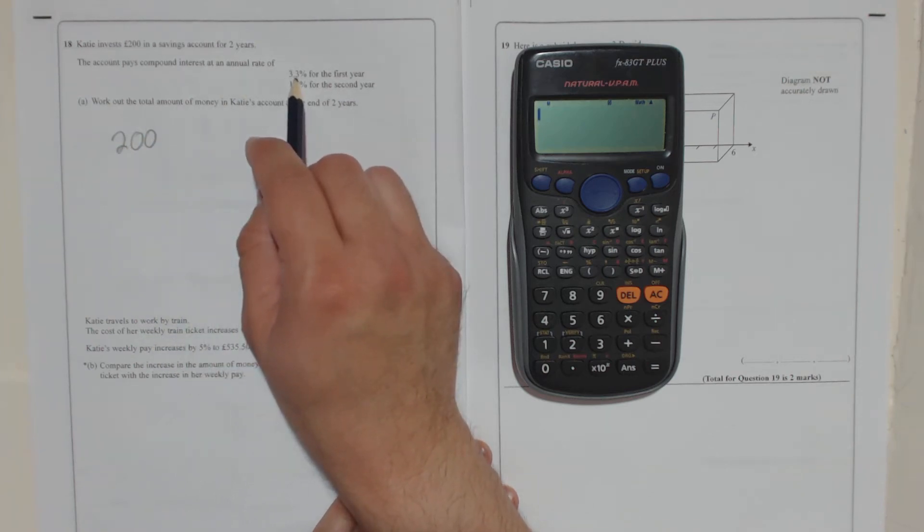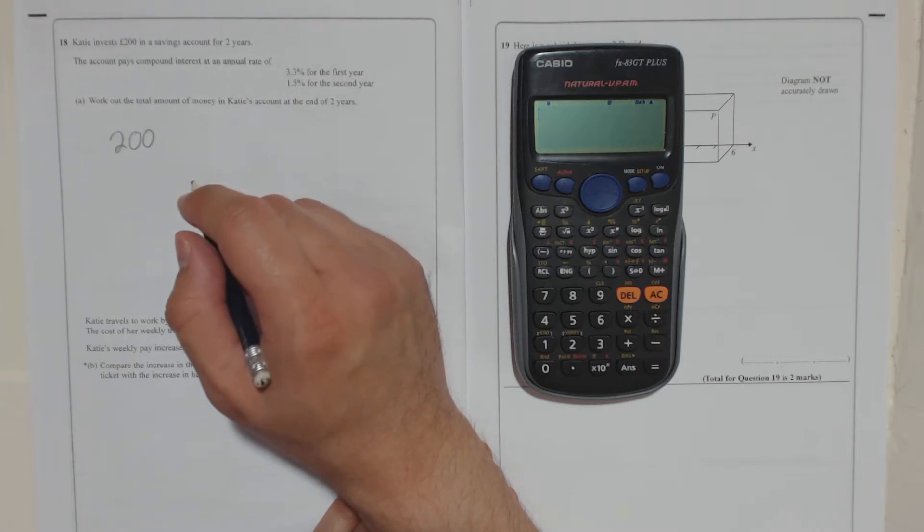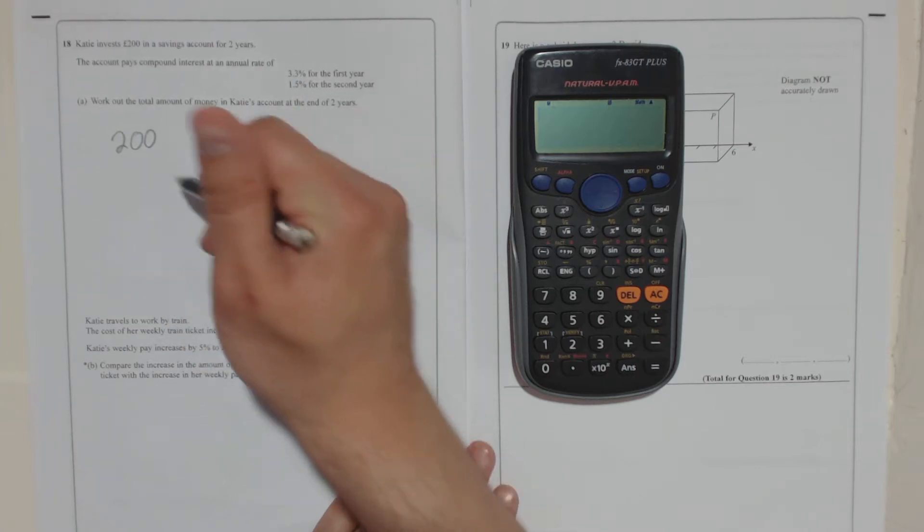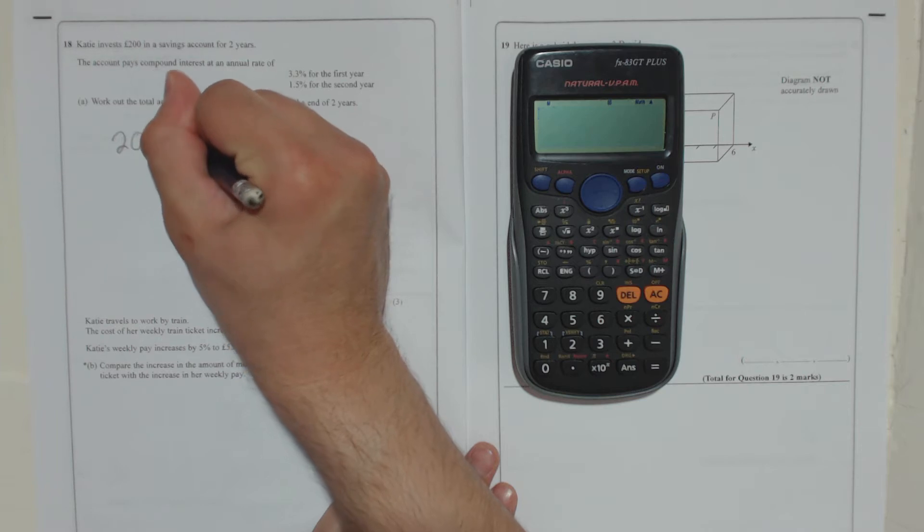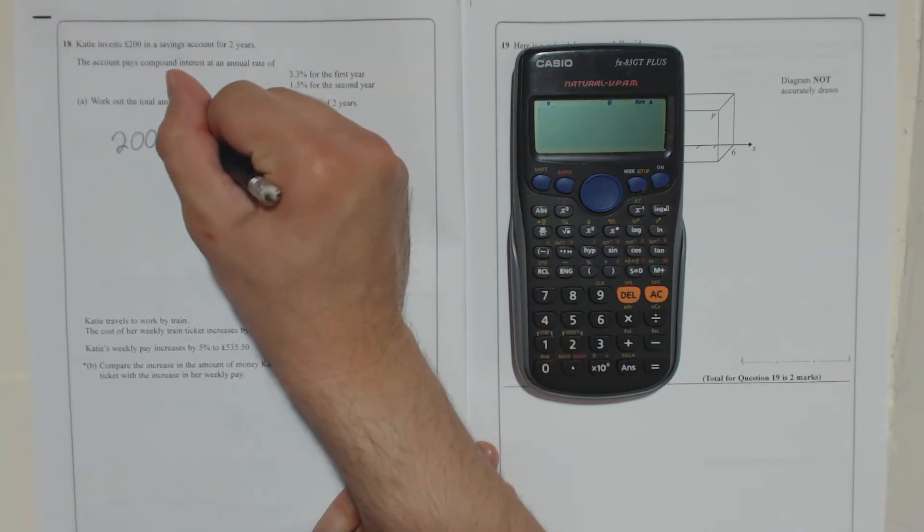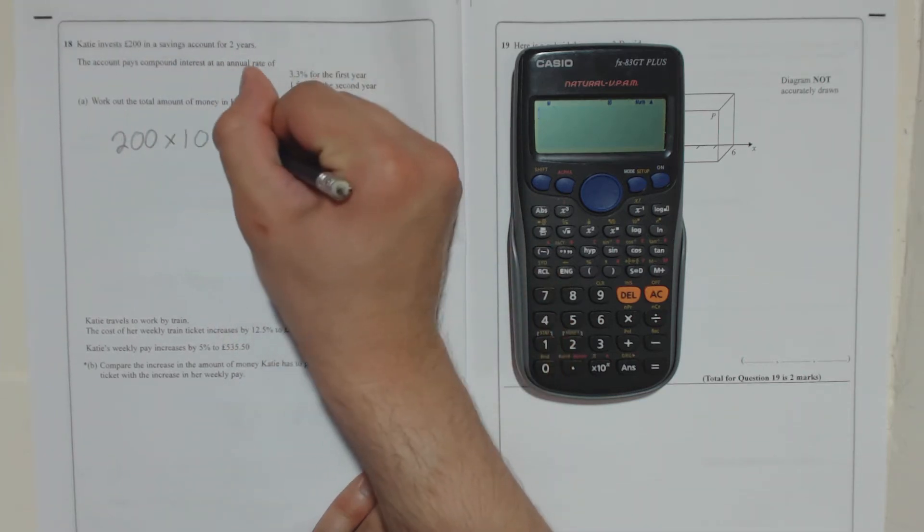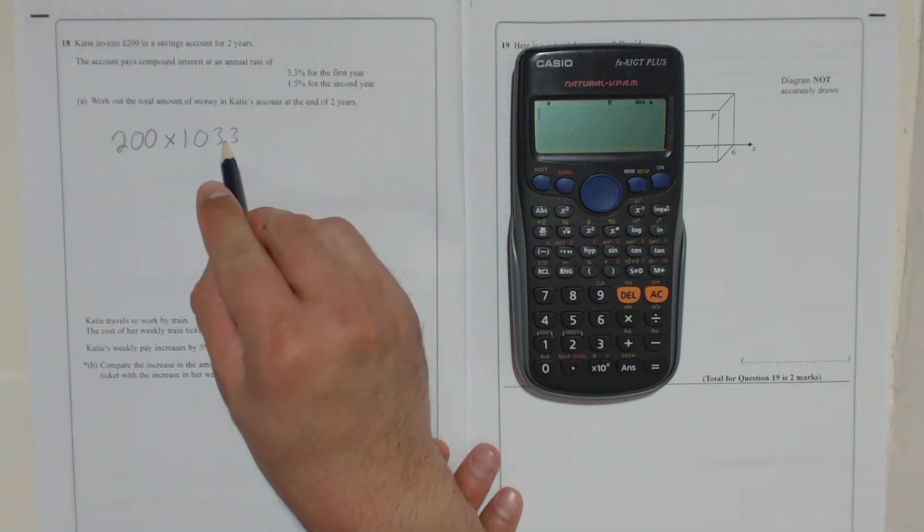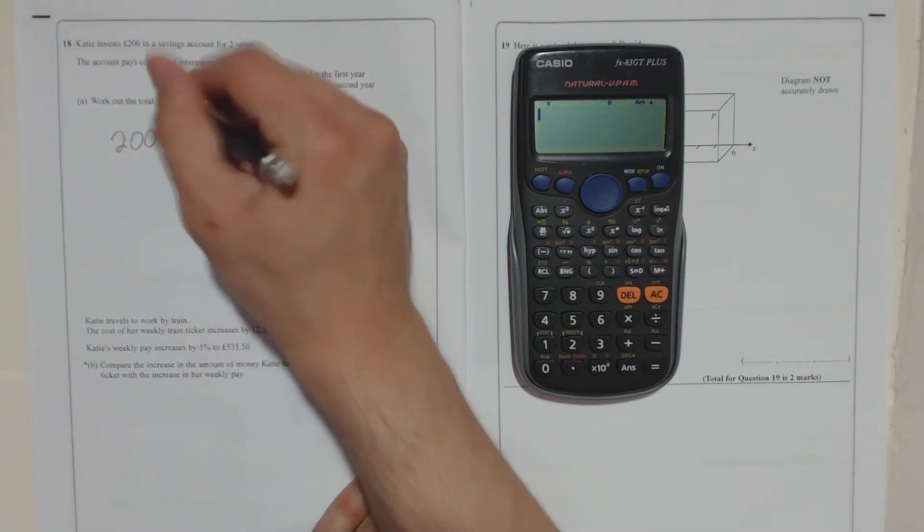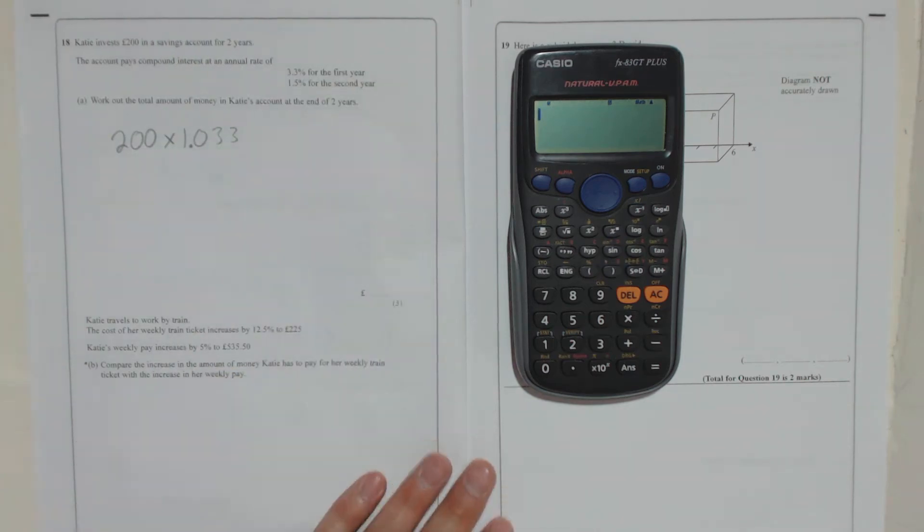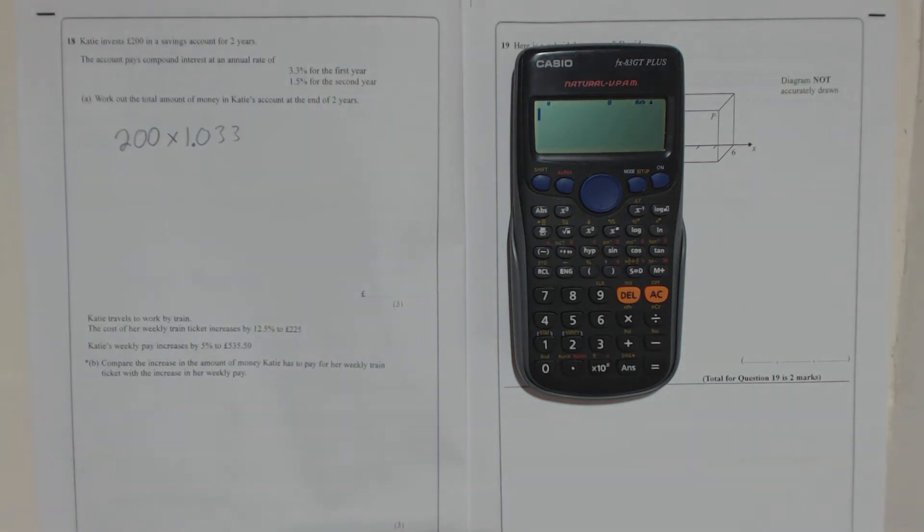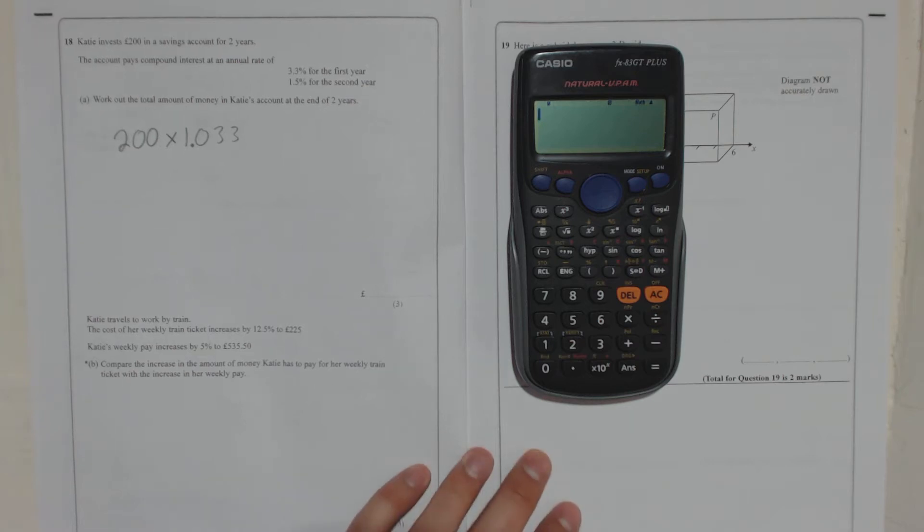So if you're going to get an extra 3.3% on top of that, that is 103.3%. So I'm going to times by 103.3%, but you're going to turn it into a decimal, so take the decimal point back twice. So if you times by 1.033, you will get a 3.3% increase.